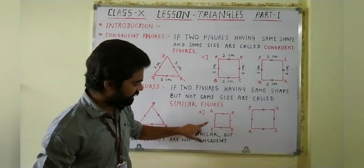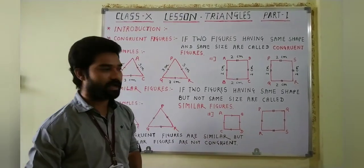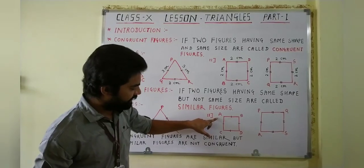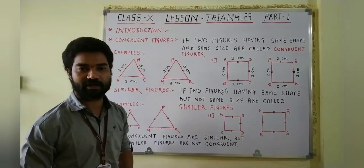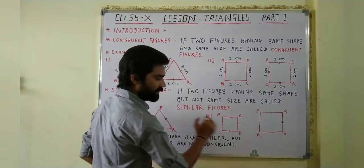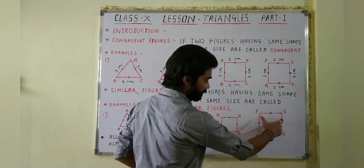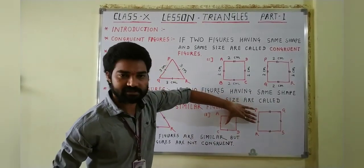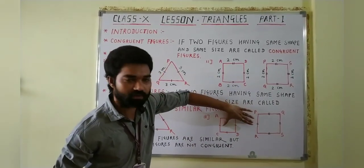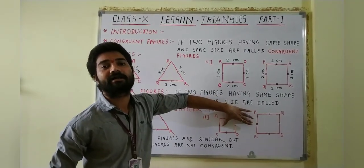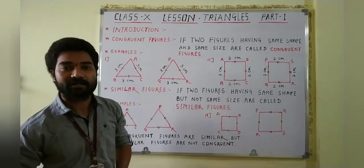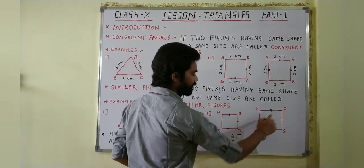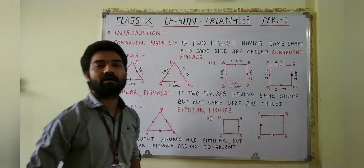Look at the second example. Here are two squares: ABCD and PQRS. All four sides of square ABCD are equal, and all four sides of square PQRS are also equal. Both squares have the same shape but different sizes. That's why squares ABCD and PQRS are both similar.